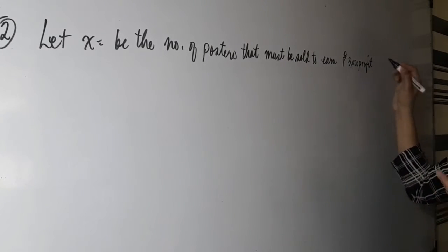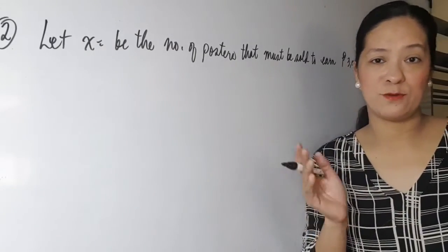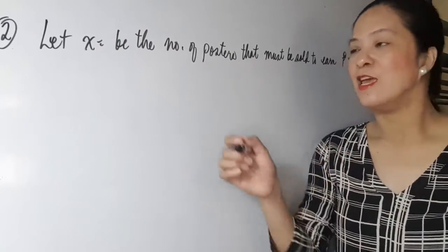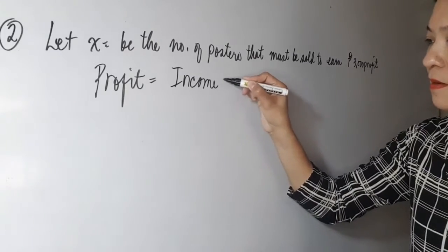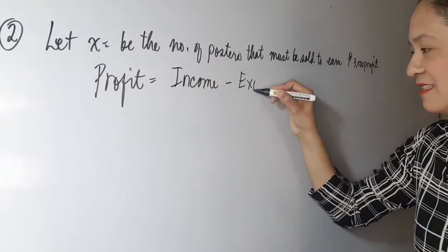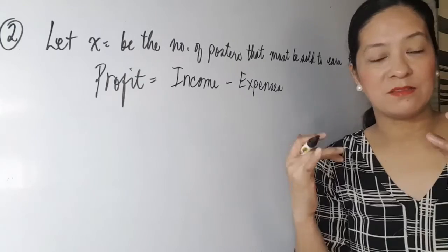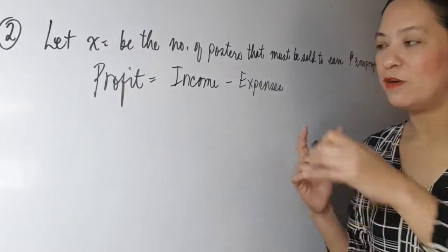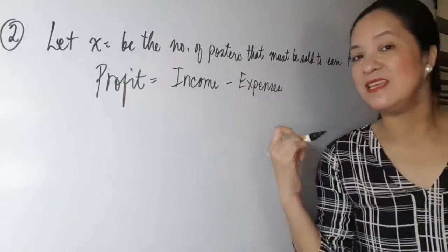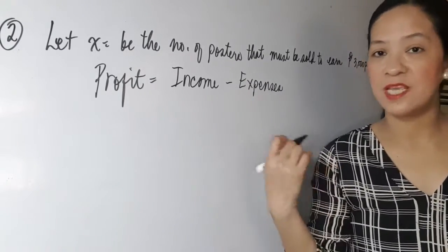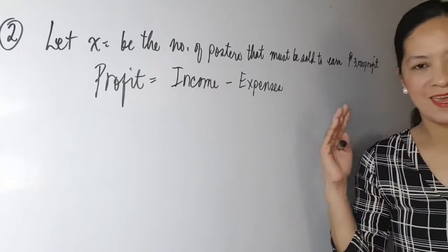If you are not yet familiar with profit: profit is something that you earn from your business — it's the earning. Profit is equal to income minus expenses. Income is your revenue or the total amount of sales. Expenses include the cost of printing, materials, etc. So profit equals income minus expenses. From the problem, in order to have a profit of P3,000 pesos, we write 3,000 on the left side.